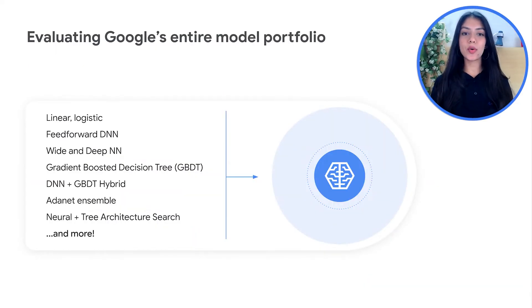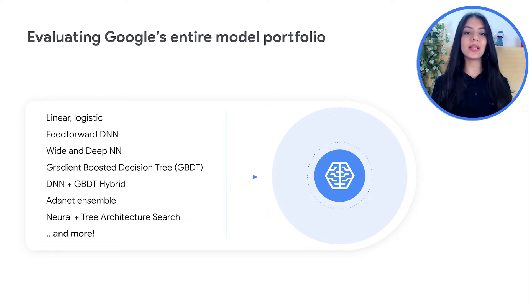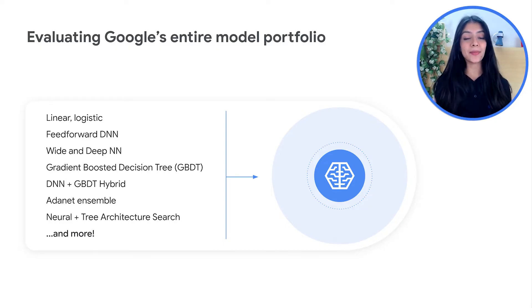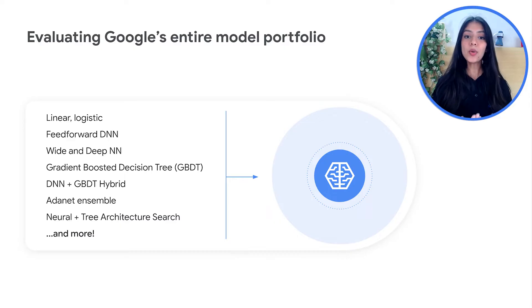When we say AutoML goes through a model zoo, for smaller and simpler datasets, linear and logistic algorithms are used, while advanced deep ensemble methods are used for larger ones. Google's model portfolio includes everything from feed-forward DNNs, deep and wide neural networks, gradient-boosted decision trees, and combinations of multiple techniques and many more. AutoML automatically cherry-picks from the best of research without you having to worry about deciding the best way forward.